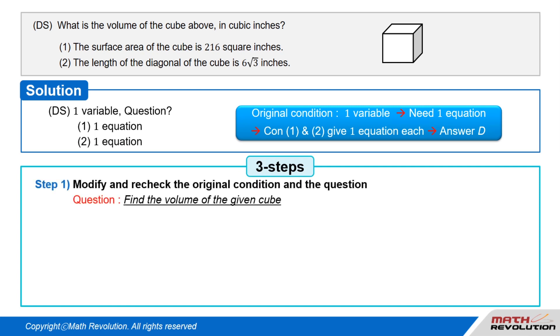Follow the first step of the variable approach by modifying and rechecking the original condition and the question. We have to find the volume of the given cube. Let A represent the length of each side of the cube, so the volume of the cube equals A cubed, as shown in the figure above.